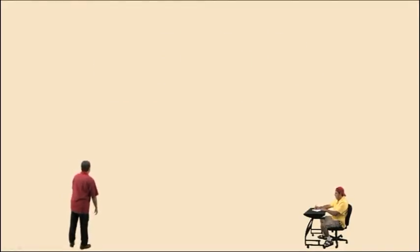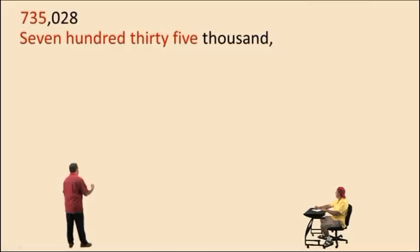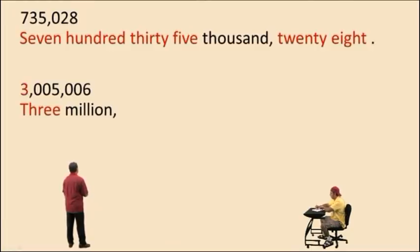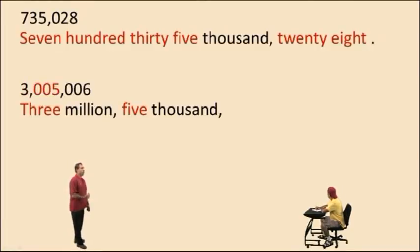All right, Charlie. Now, here's a number, let's say it correctly. Now pay attention. Here we go, Charlie. Seven hundred and thirty-five thousand twenty-eight. That's it. Here we have three million five thousand, because we have a five in our thousands period, six. There you go.